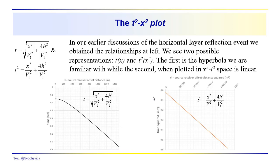For the case where the layer is horizontal, we end up with a linear relationship between T squared and X squared. That's really the benefit of the T squared X squared transformation, that's what makes it very useful.